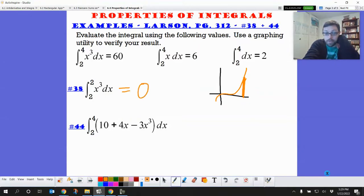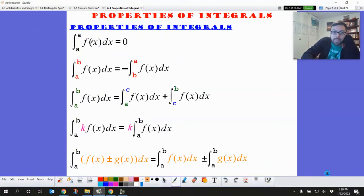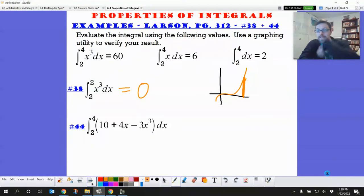Nothing happens. So that's one of the properties that I skipped up at the top. If these two values are the same, its area is just zero. Doesn't happen a lot, but every once in a while they try to trick you with something like that.